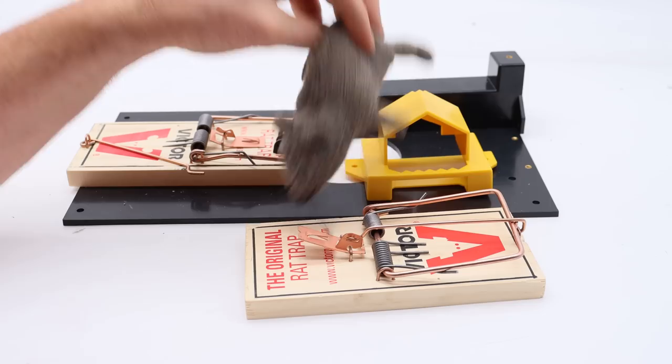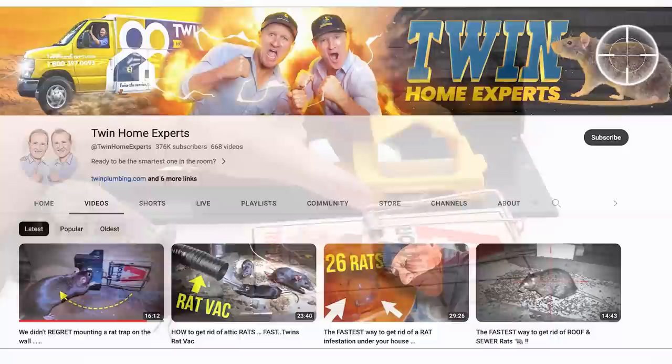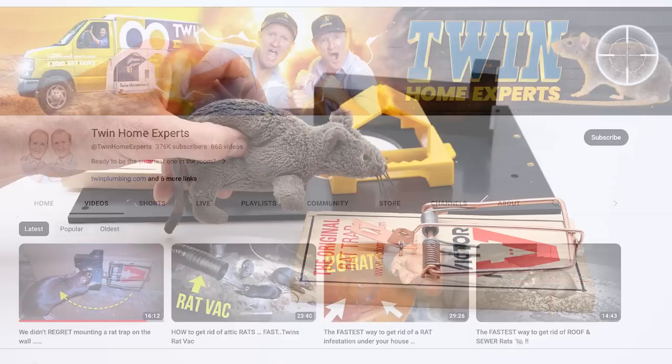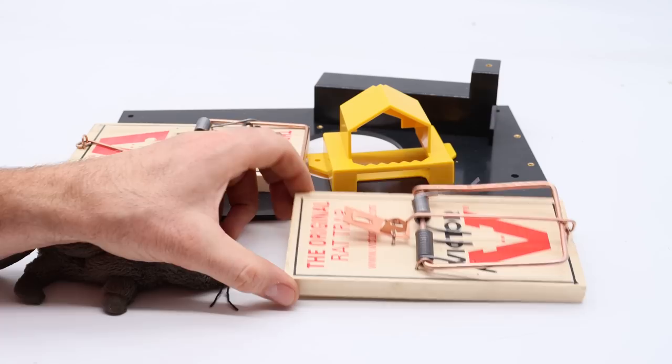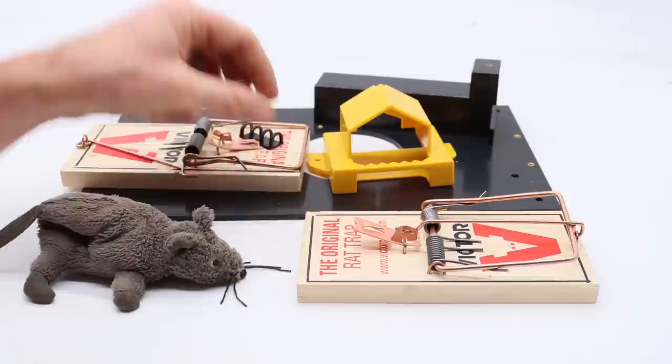That's quite a few problems for a simple trap that have all been solved with these upgrades. Now these new and improved traps were invented by friends of mine who have a YouTube channel called the Twin Home Experts. They are professional exterminators who have dealt with huge rat infestations in people's houses, and they've seen it all, including the many different ways that this style of trap can fail. And they came up with a solution for pretty much every problem.